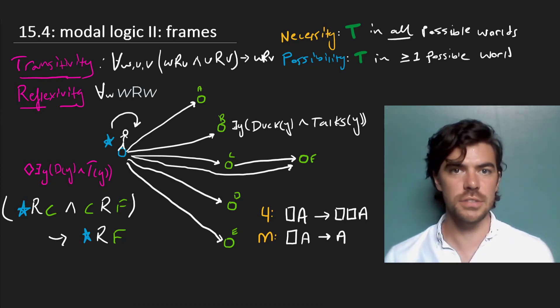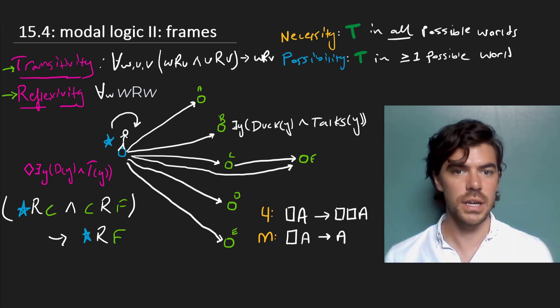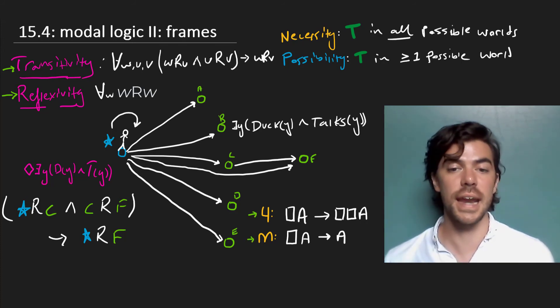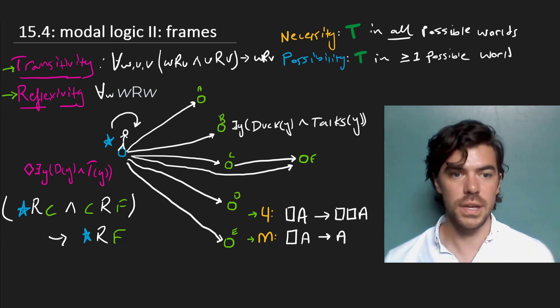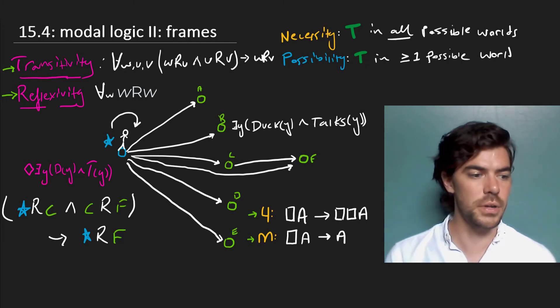The point that I want to get across in this video is that by adopting these conditions on frames, that is to say, on our accessibility relations, these arrows pointing to the different worlds, we get these different axioms in our system. Because, looking again at M, if A is true in all possible worlds, and the actual world is included in our frame, then it's actually true that A holds in our world.